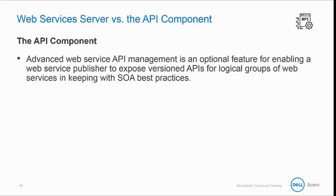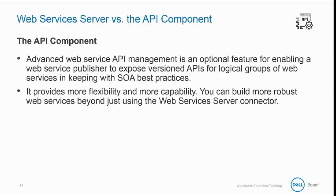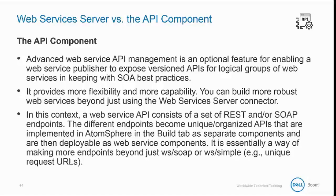The API component involves advanced web service API management, which is an optional feature for enabling a web service publisher to expose versioned APIs for logical groups of web services in keeping with SOA best practices. It provides more flexibility and capability — you can build more robust web services beyond just using the web services server connector. The different endpoints become unique, organized APIs implemented in AtomSphere in the build tab as separate components, deployable as web service components.